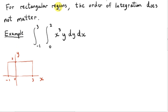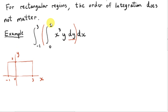For rectangular regions — those are the regions considered in previous videos — the order of integration does not matter. A rectangular region is one whose sides are parallel to the x and y axes. In this example, since the inner integral is with respect to y, the limits 0 to 2 are the y limits, and the outer limits from x equals minus 1 to x equals 3 are the x limits, giving us this rectangular region in the xy plane.